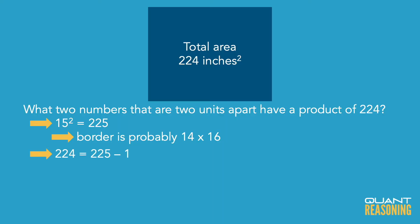You can use the difference of squares here. 224 is the difference of two perfect squares — it's 225 minus 1, or 15 squared minus 1 squared. So, using the special product for difference of squares, that's 15 minus 1 times 15 plus 1, or 14 times 16.